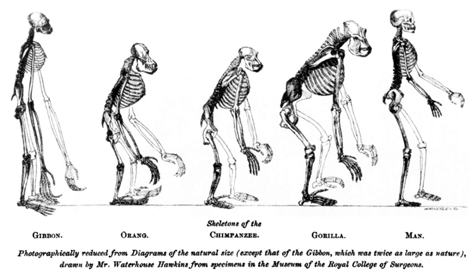In the 1840s, much of Ireland's population depended on potatoes for food. They planted namely the lumper variety of potato, which was susceptible to a rot-causing oomycete called Phytophthora infestans. The fungus destroyed the vast majority of the potato crop, and left one million people to starve to death.